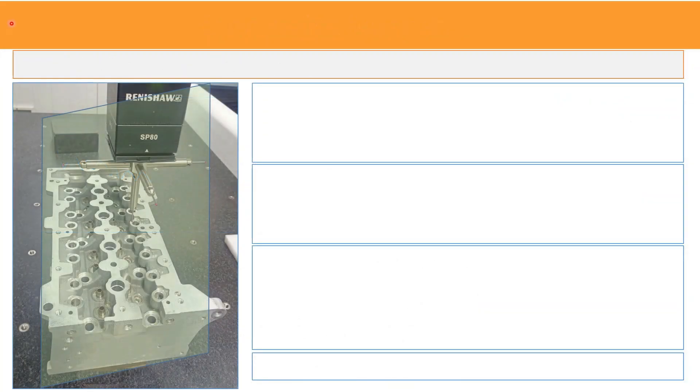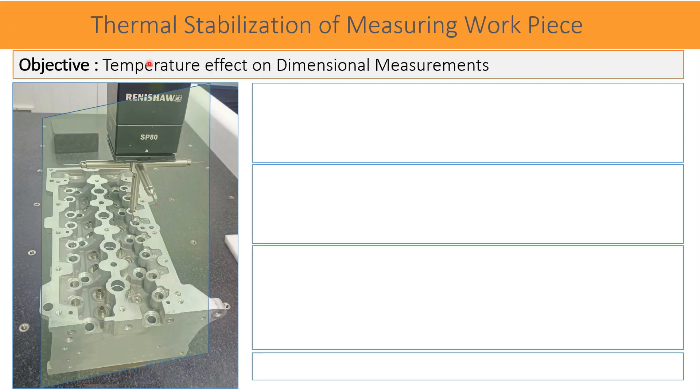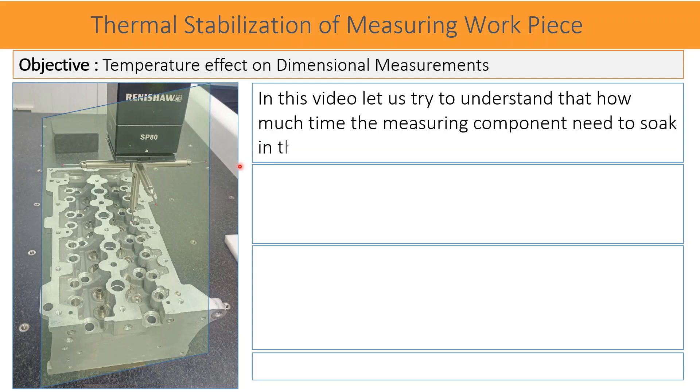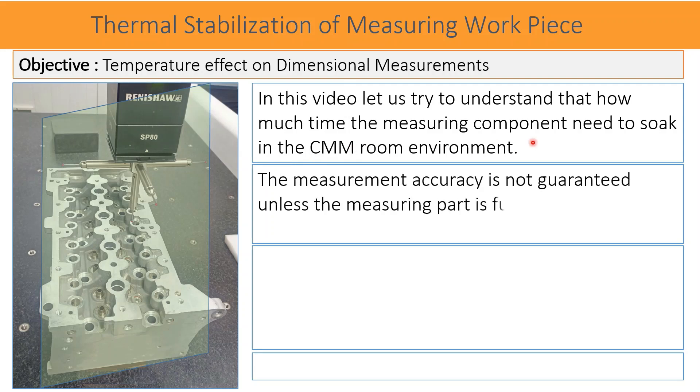The objective of this video is understanding the temperature effect on dimensional measurement. A similar experiment as previous is carried out to know the temperature effect on dimensional measurements of the manufactured part. In this video, let us try to understand how much time the manufactured component needs to soak in the CMM room environment. The measurement accuracy is not guaranteed unless the measuring part is fully reached to its thermal equilibrium.